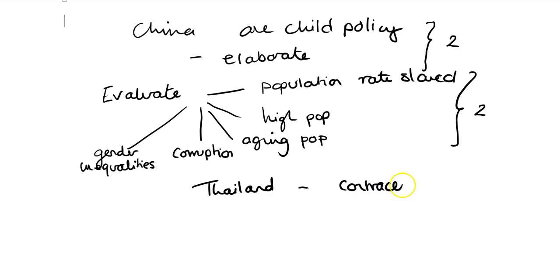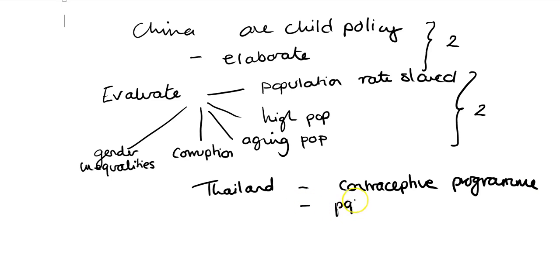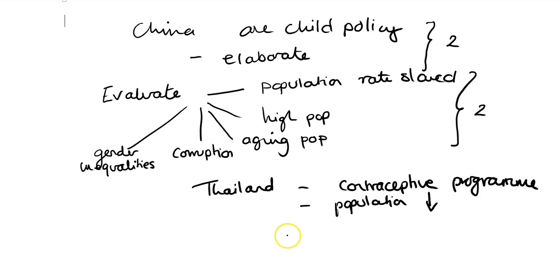Thailand's contraceptive program has been very successful — the population growth rate has declined overall. In Thailand, universal healthcare and development policies around reproductive healthcare and maternal health have been very successful.